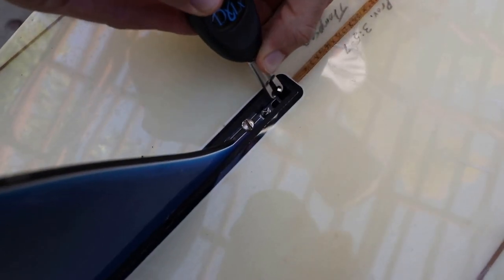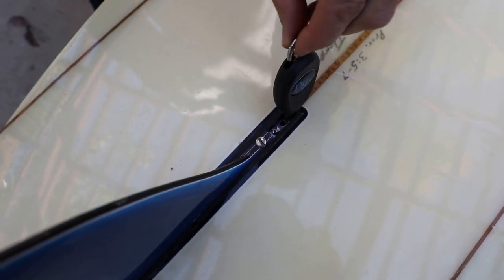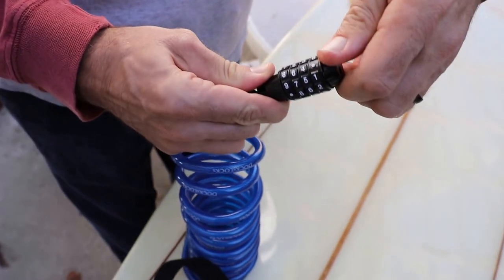Once you've got that completed and sealed, you have enough space to put the lock right on in there. See how that opens up and then you've got a spot for your combo.